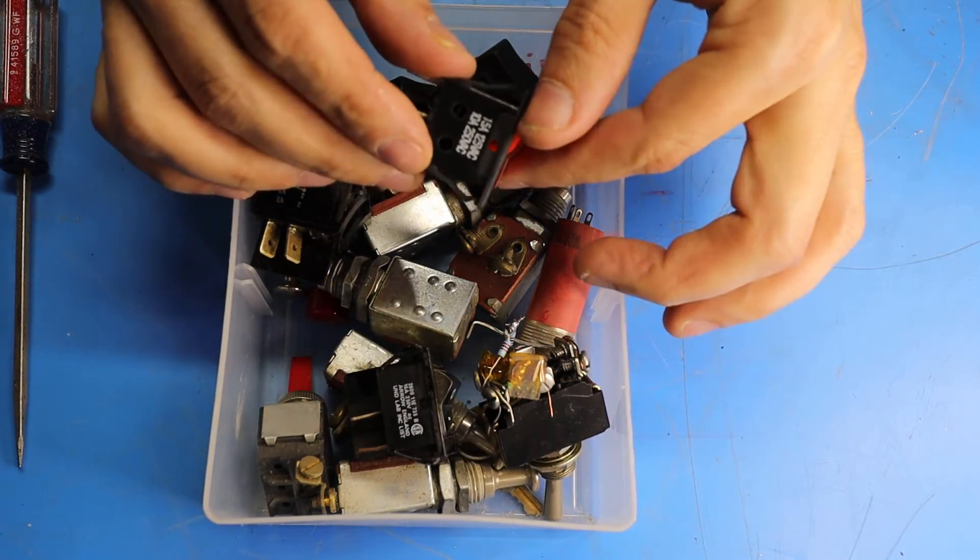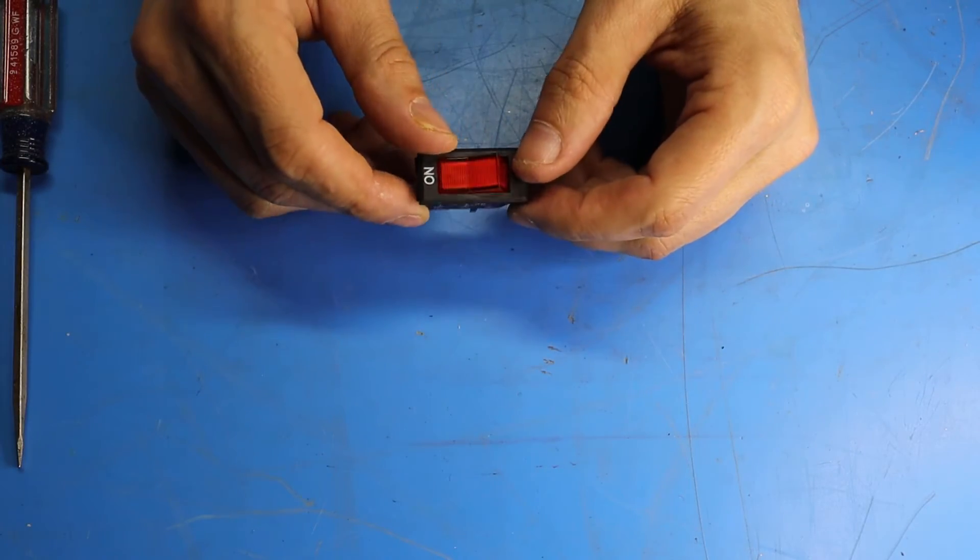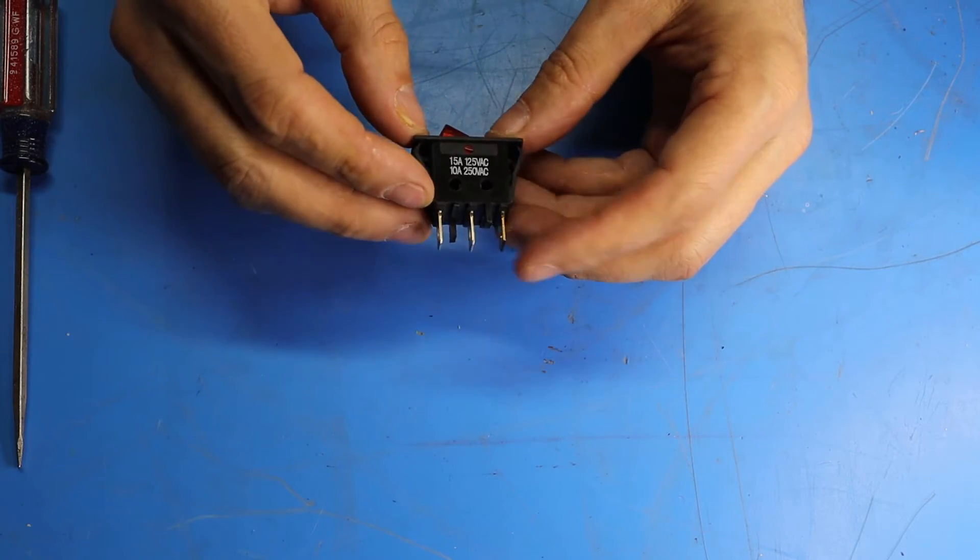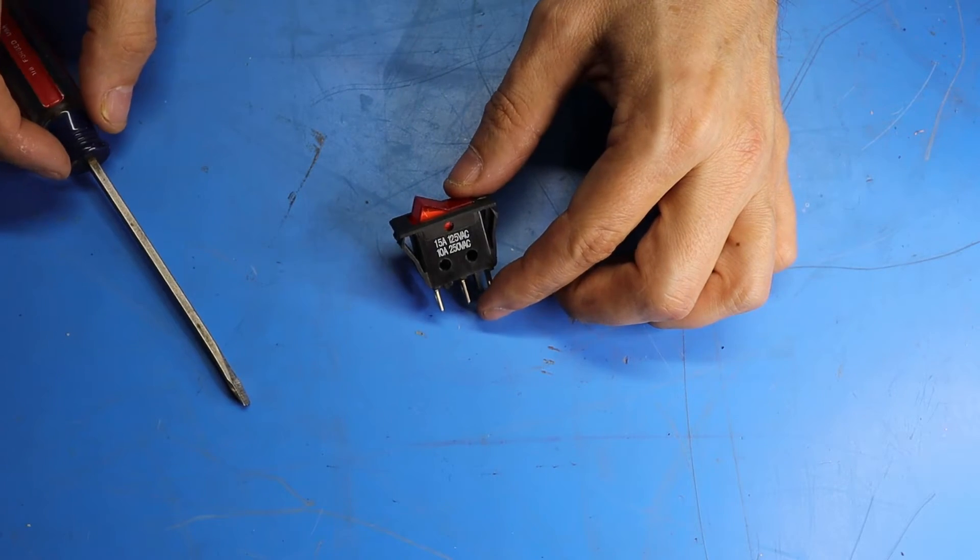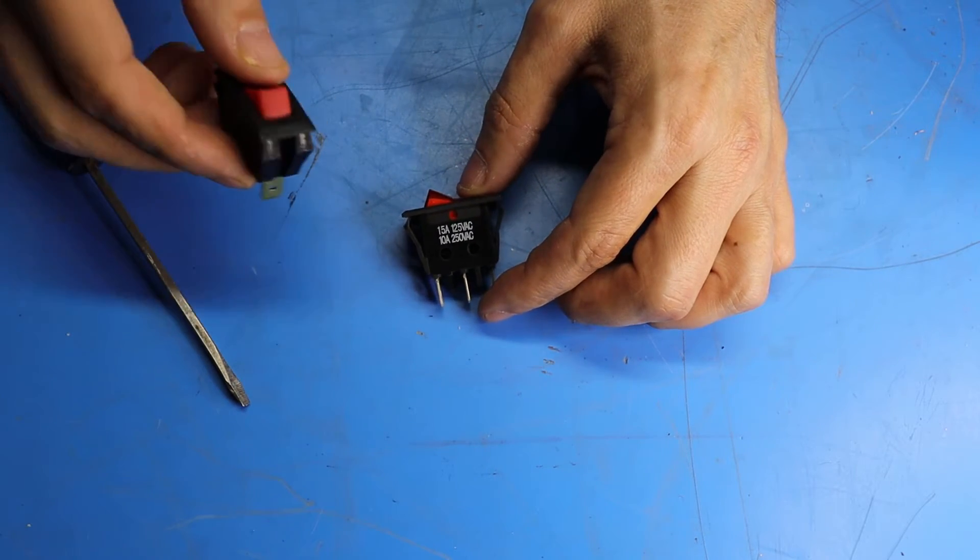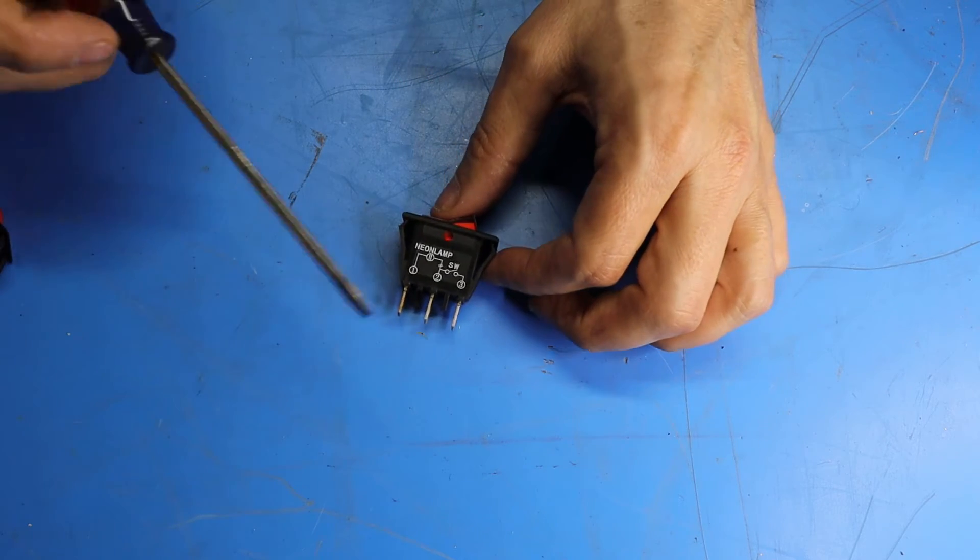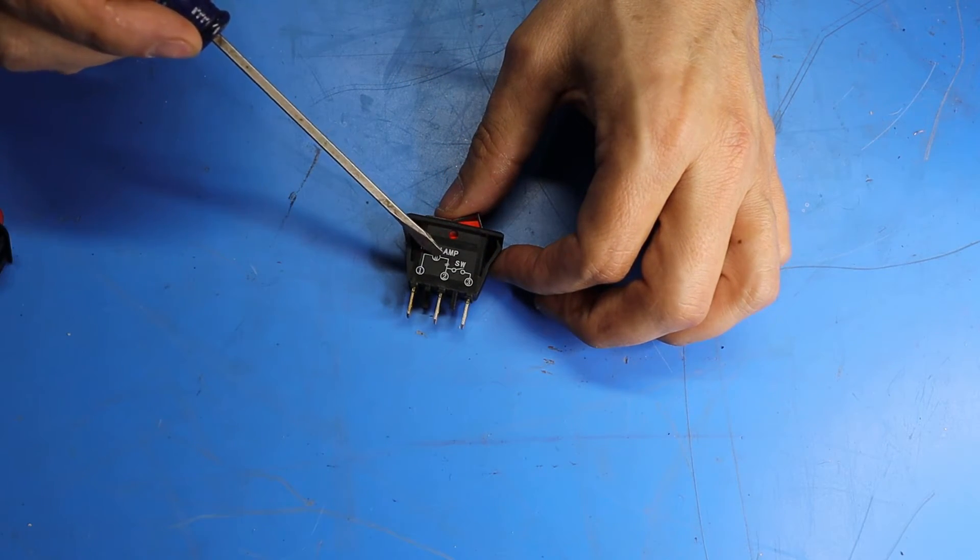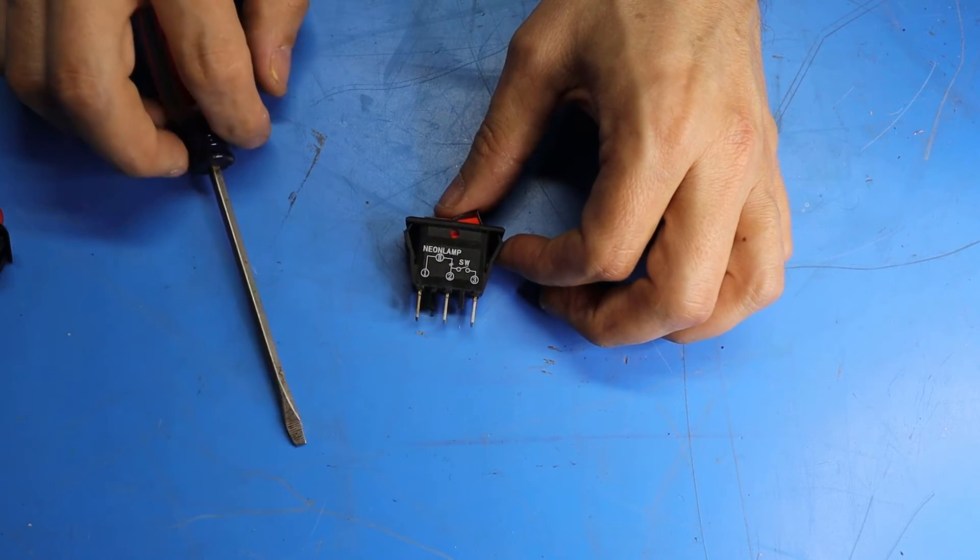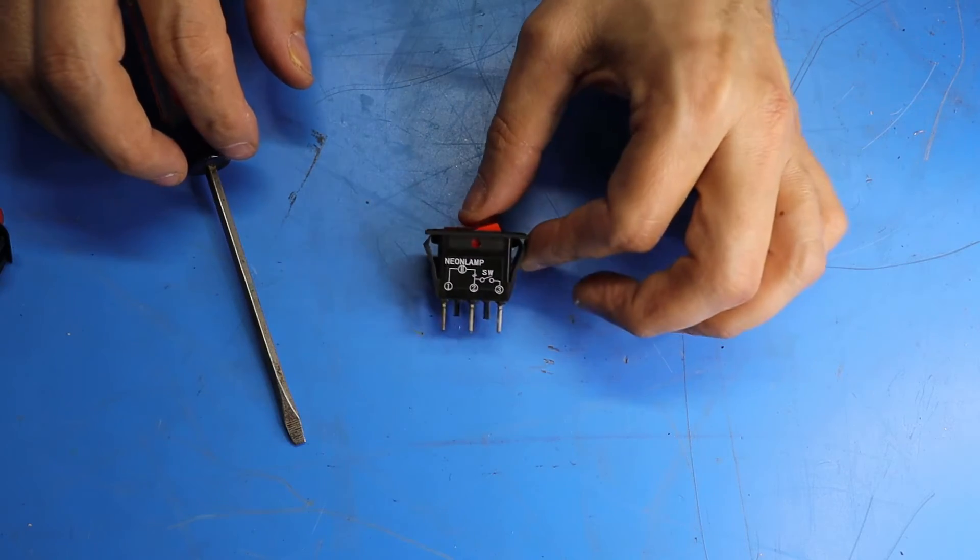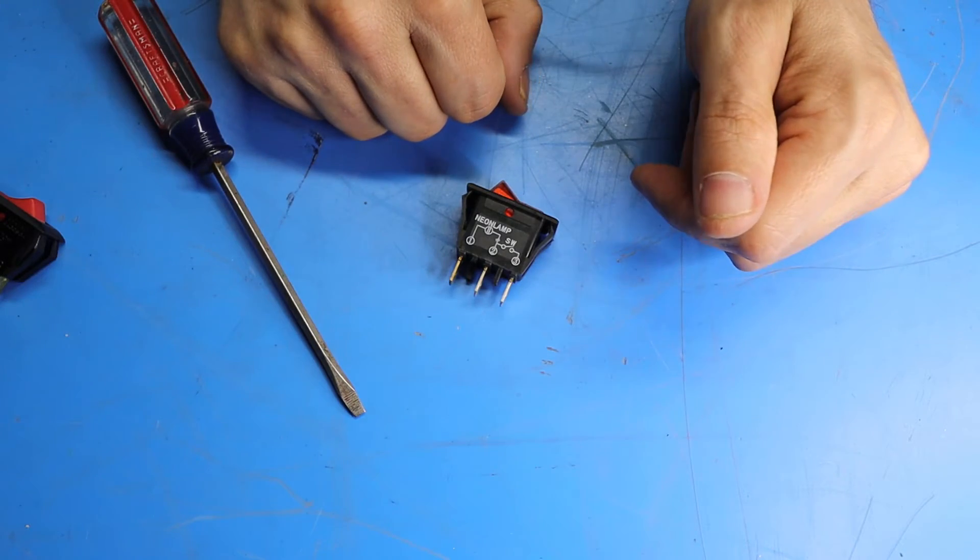But I happen to have a collection of switches here in my junk box, if you want to call it that, and I found one here that should work. Now there's no brand name on this switch, so it's probably made in China. If we look at the side here, we can see that it's rated at 15 amps at 125 volts AC. Just a little bit less than the original Carling. But if we flip it over, I can see that it is a switch with a neon lamp inside, and pins two and three here are switched. So I think this is going to work in the power supply and save me the wait time and expense of having to order a new one.